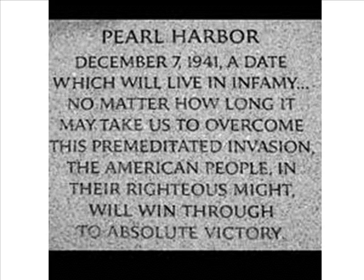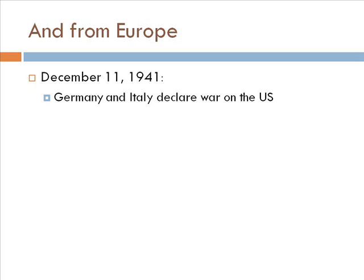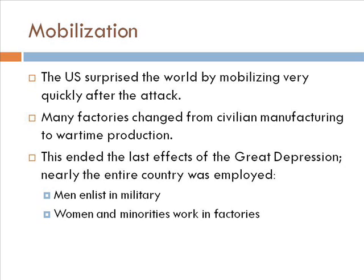That is not the end of us getting into war, because Japan is allied with the Axis powers of Germany and Italy. Just a few days later, on December 11, they declare war on the U.S. So at the end of 1941, the U.S. policy of isolationism is gone. The U.S. is at war not just with Japan, who attacked Pearl Harbor, but with their allies Germany and Italy in Europe. Now we've got a fight in Asia and in Europe.